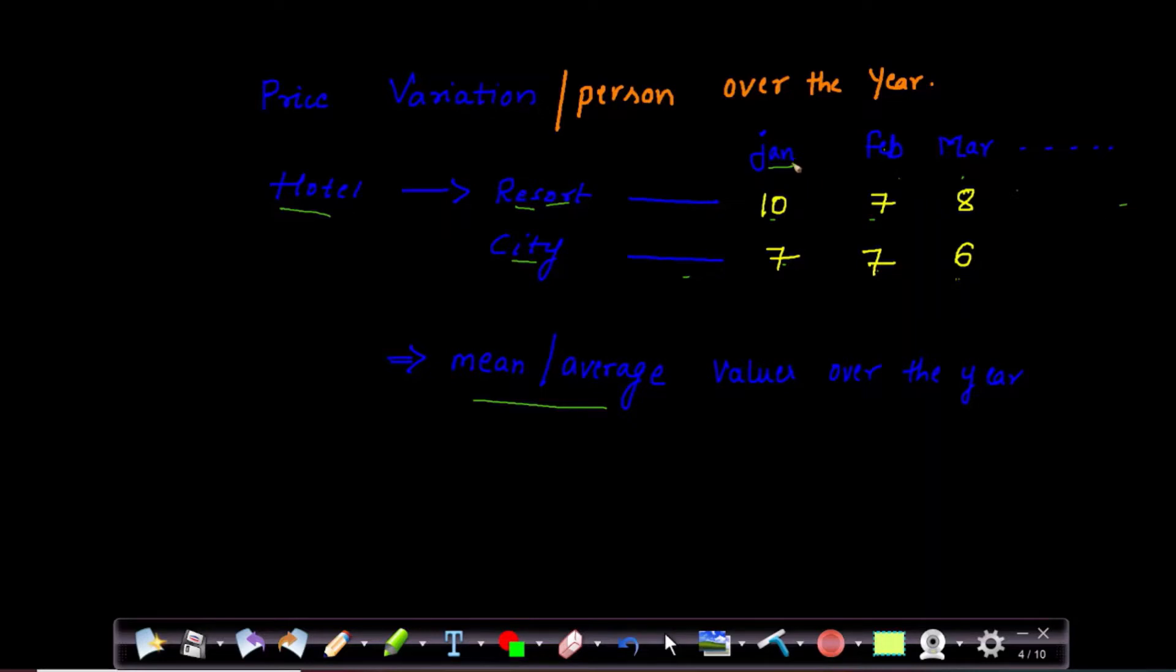So, with this data, whatever the amount we are seeing here, we can see that okay, January is the one which is having the higher number. Like this is the one. In this month, it is expensive. In the resort hotel. Same thing. In city, it is from Jan to Feb. This is quite expensive. This is the kind of analysis we are trying to do right now.